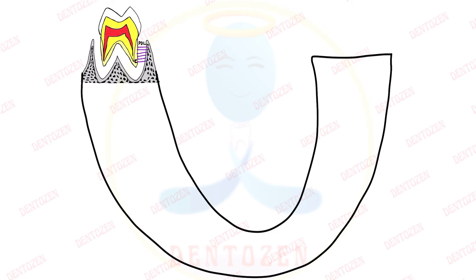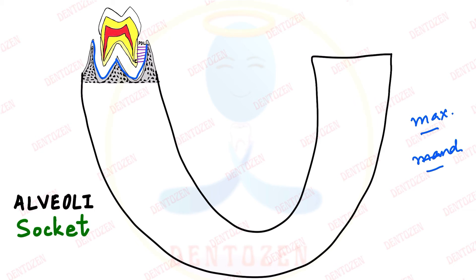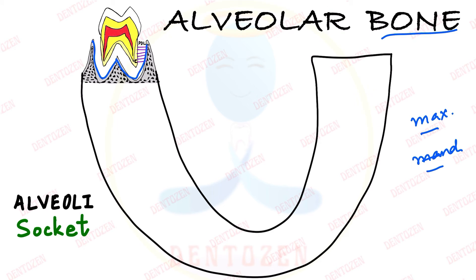The roots of our teeth are located within the jaws, that is within the maxilla and the mandible bones. That part of the maxilla and mandible which provides space for the roots of the teeth is known as alveolar bone. The word alveoli comes from socket — socket means the hollow space where something goes. So alveolar bone provides the socket for the roots of the teeth.